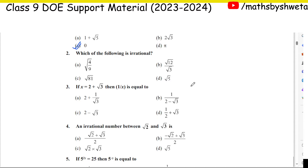Which of the following is irrational? A number which we cannot remove from the root is called an irrational number. So if I can remove it from the root, it is rational. For example, √4 can be removed from the root, but √5 cannot — so √5 is an irrational number. Clear?